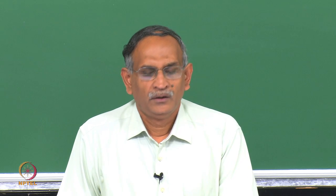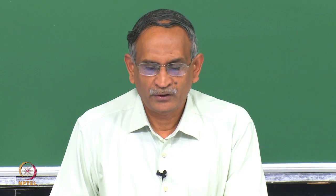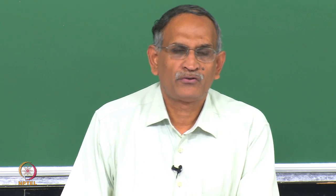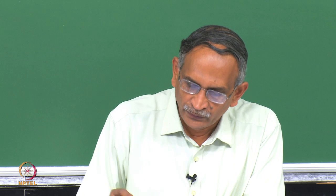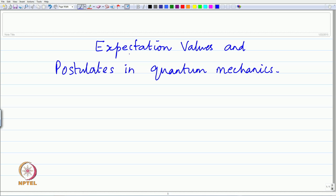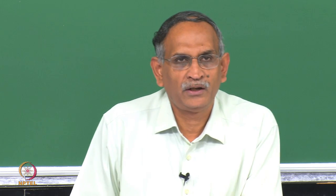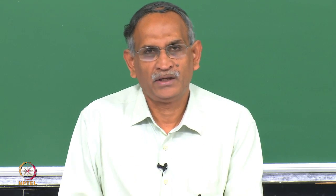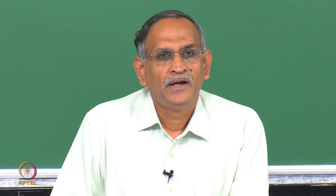Welcome back to the lecture. We continue from the last lecture on Heisenberg's uncertainty principle, where I introduced the concept of the average value or the expectation value. In this part of the lecture we will consider the formal definition for expectation values in quantum mechanics, and if time permits I shall talk more about the postulatory basis — the starting points from which we can build quantum mechanics — stated in very simple terms.